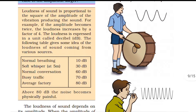The loudness of a sound is proportional to the square of the amplitude of the vibration producing the sound. For example, if the amplitude is doubled, the loudness increases four times.